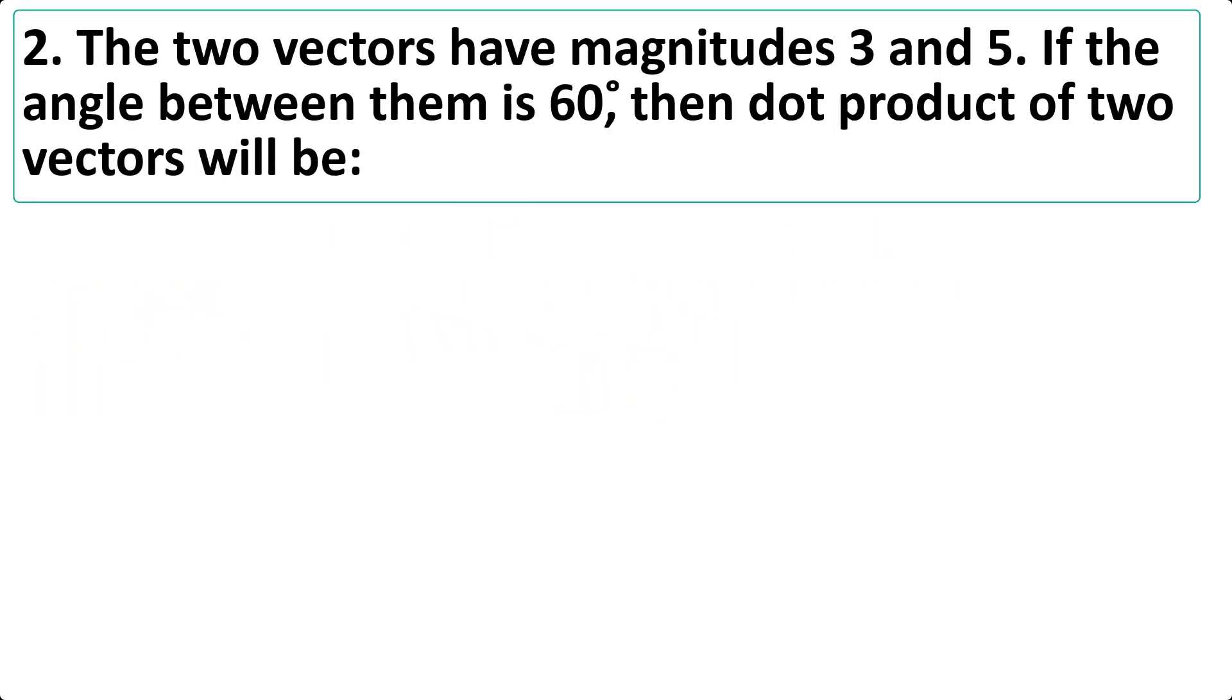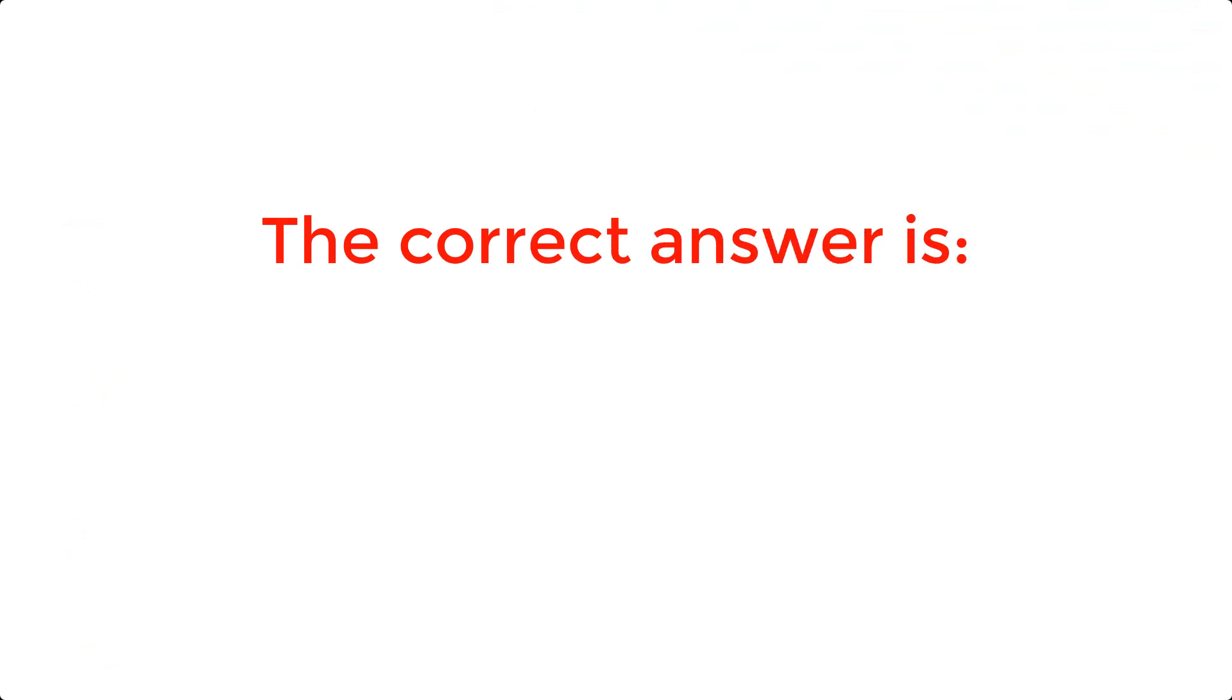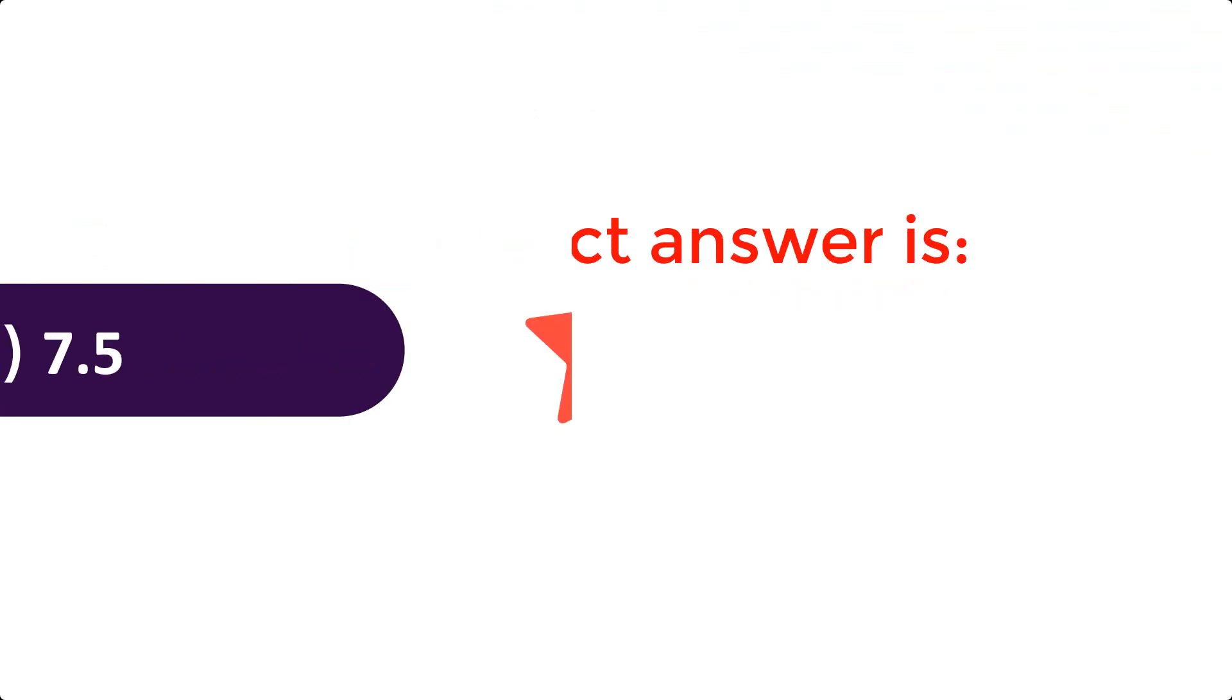The two vectors have magnitudes 3 and 5. If the angle between them is 60 degree, then dot product of two vectors will be: A. 6.5 B. 7.5 C. 8.4 D. 7.9. The correct answer is B. 7.5. Question 1.